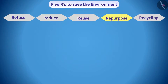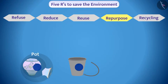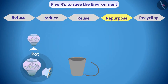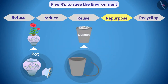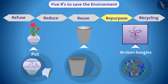The fourth R is Repurpose. Sometimes things that are purchased for a purpose no longer remain useful for that purpose. For example, a broken pot — such items can be used for any other useful work. A tree can be planted in a broken pot. A broken bucket can be used as a dustbin. Broken bangles can be used to make decorative items.